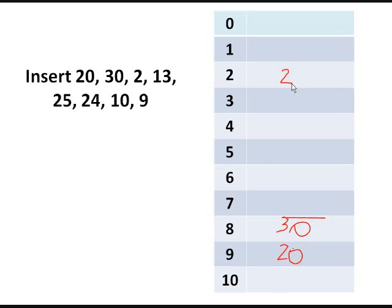13 modulo 11 is also 2. That's our first collision. So we will check first the next cell if it's empty. And yes, it's empty. So we can insert 13 at index 3. Then the next key to be inserted is 25. So 25 modulo 11 is 3. So it will check the next cell if it's empty, which is index 4. And it's empty. So we can insert 25 there.